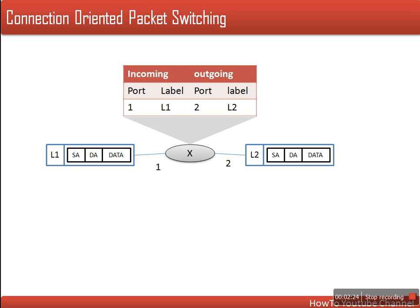So when we say we are having 5 virtual channels in a connection, it means the physical connection will be one, but the capacity — the bandwidth of that physical channel — is shared between 5 communications. Every communication will have a label, a number, to differentiate them. So every router will be having this information: incoming port, incoming label, outgoing port, outgoing label.